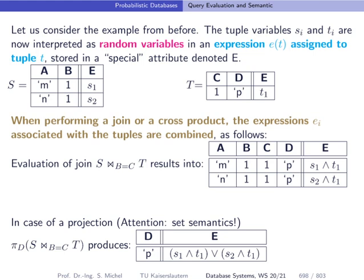On the previous slides, we had these two relations S and T, and we took, in this example, calculations of the query results, specific probabilities for the existence of a tuple or not.